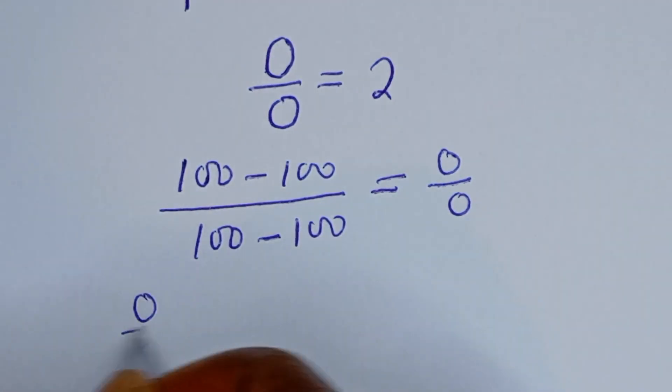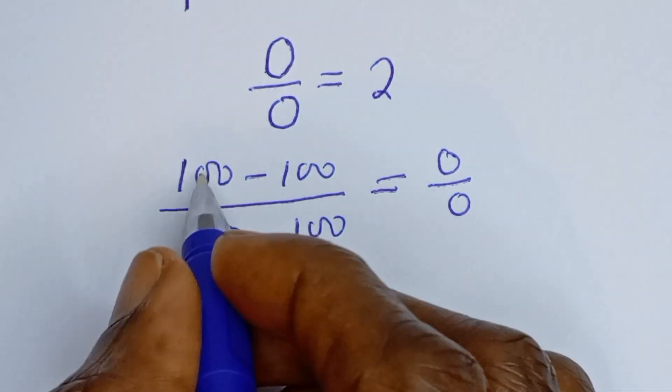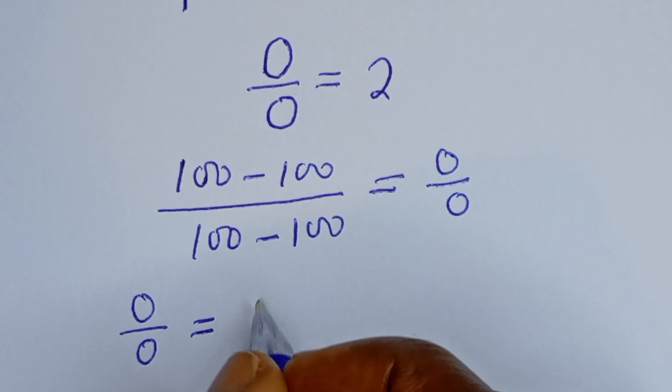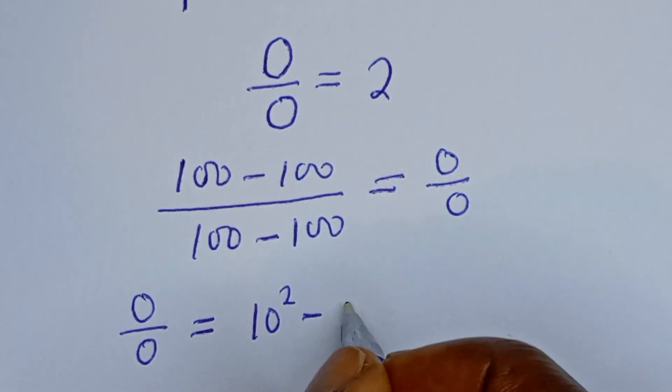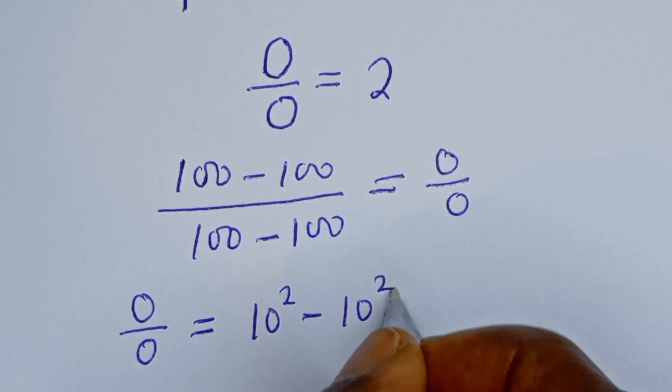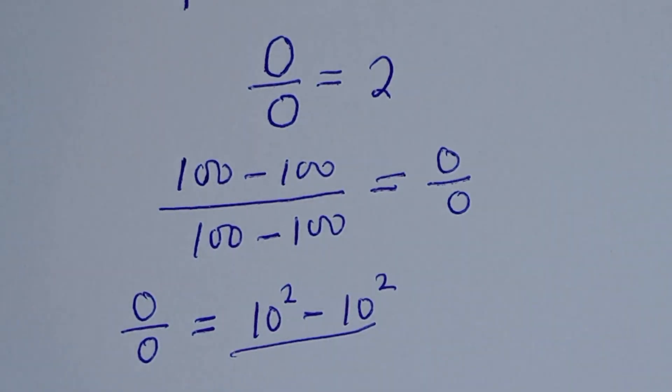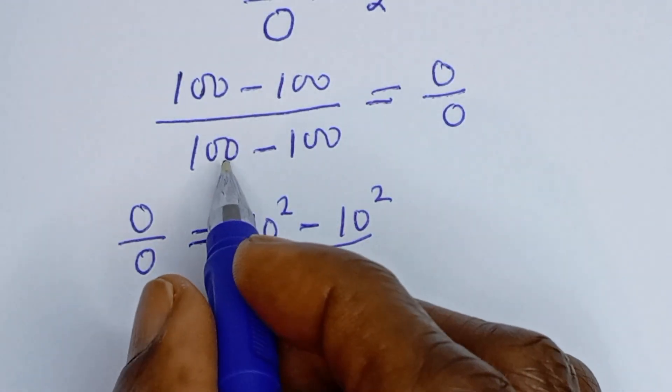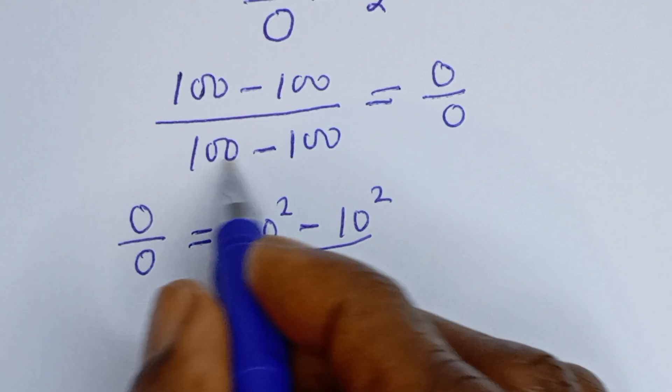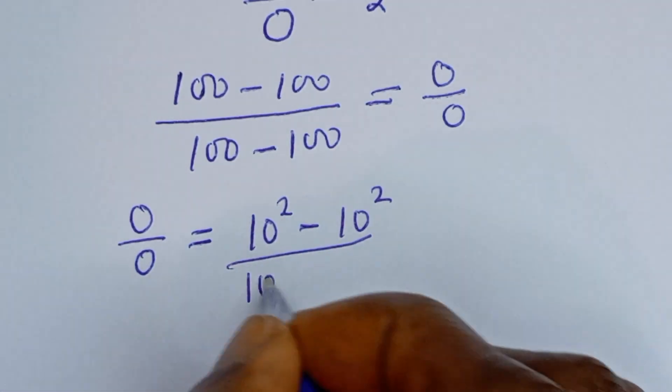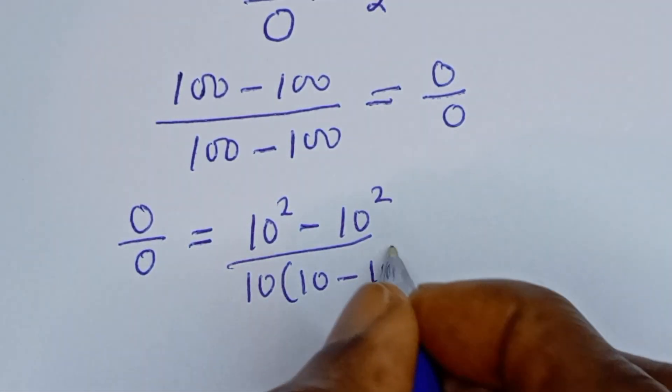0 divided by 0 is equal to, from here, 100 can be written as 10 squared minus this 100, the same thing as 10 squared, divided by, the denominator can be written as, if you factor 10 out, we have 10 bracket 10 minus 10.